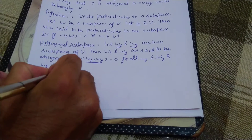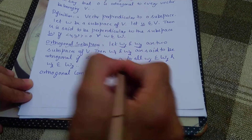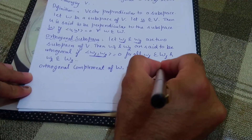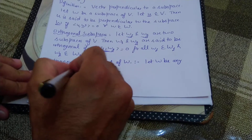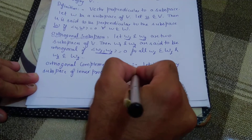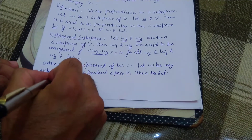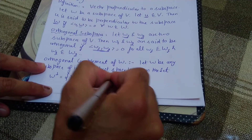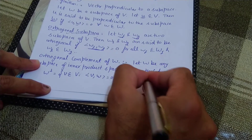The next definition is the Orthogonal Complement of W. Let W be any subspace of an inner product space V. Then the set W-orthogonal is defined as the set of all v in V such that the inner product of v and w equals zero for all w belonging to W.